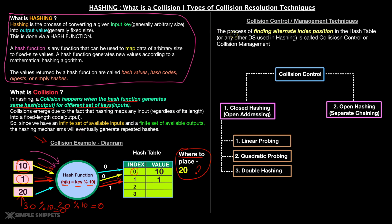Basically, in very simple terms, the process of finding alternate index position in the hash table is called collision control or collision management. So this question that is answering this question, where to place 20, right, this is where collision control comes into picture. And when you are talking about collision control, commonly there are two methodologies to approach collision control. One is called closed hashing, also called as open addressing. The second one is called open hashing, also called as separate chaining. These are two different methodologies.